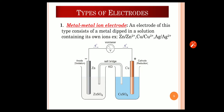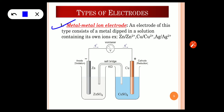Moving to the next topic — types of electrodes. The first type is the metal-metal ion electrode. Examples are zinc dipped in ZnSO4 and copper dipped in copper sulphate. Zinc is a metal in a solution containing its own ions Zn²⁺, and copper is dipped in a solution containing its own ions Cu²⁺. Therefore Zn | Zn²⁺ and Cu | Cu²⁺ are examples of metal-metal ion electrodes, because this type consists of a metal dipped in a solution of its own ions.